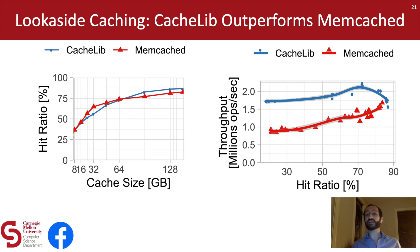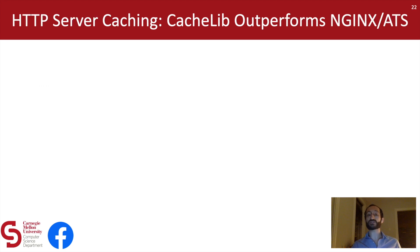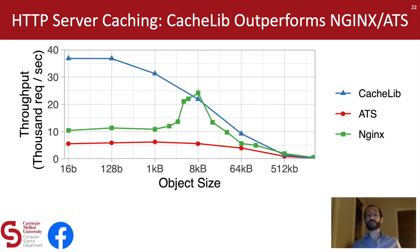Similarly, we implemented a Flash-based HTTP server cache using CacheLib and compared that to the Flash caching implementations from NGINX and Apache Traffic Server. We compared these systems in terms of throughput using workloads consisting of different sized objects. What we see is that for a wide range of object sizes, CacheLib again outperforms its competitors. CacheLib has a particular advantage when object sizes are small, due to its small object cache which is highly optimized for caching small objects on Flash.